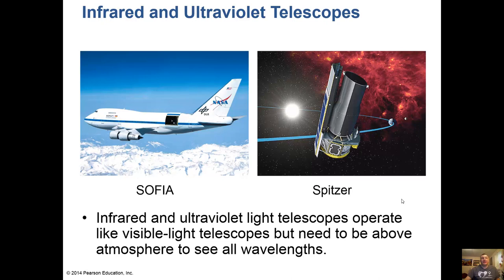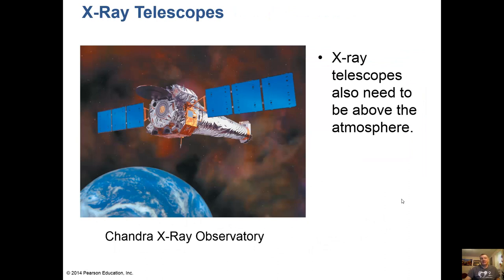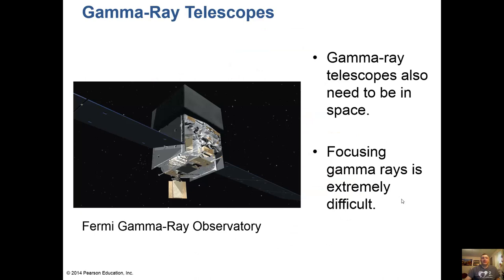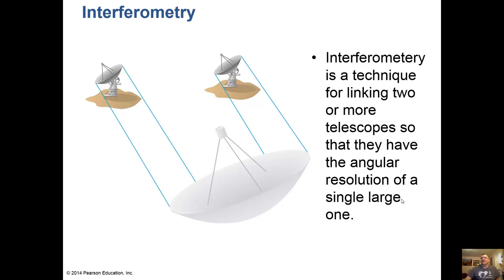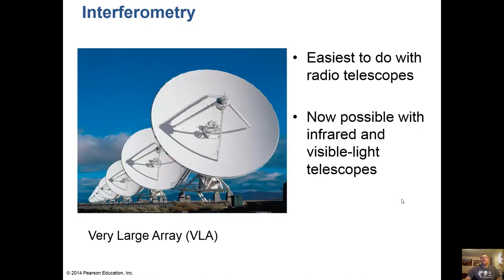SOFIA gets above the water vapor in the atmosphere to observe infrared light. The Chandra X-ray Observatory is in space to observe X-rays that can't reach the ground. We also have gamma-ray observatories in space, because gamma rays can't pass through the atmosphere and are extremely difficult to focus given their high energies. Multiple radio telescopes can be linked together using a technique called interferometry, giving them the angular resolution of a single large telescope. This is easiest with radio telescopes — we have the Very Large Array in New Mexico — and it's now becoming possible with infrared and visible light telescopes.